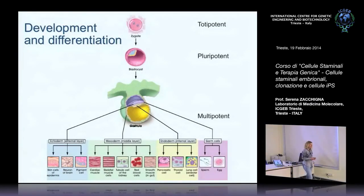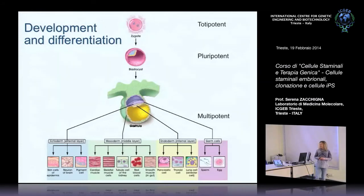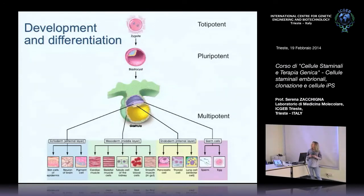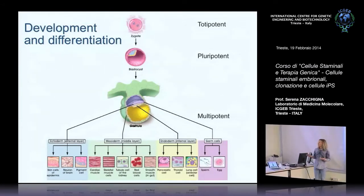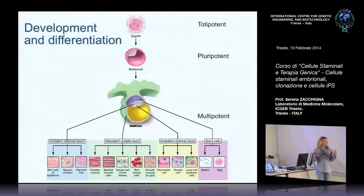L'unica cellula staminale vera è questa: lo zigote, che si viene a formare tradizionalmente per unione di una cellula uovo e di uno spermatozoo, e dalla quale ha origine tutto quello che serve per formare un organismo adulto, quindi tutte le strutture che supportano lo sviluppo embrionale, che sono le strutture placentari, e l'embrione vero e proprio.